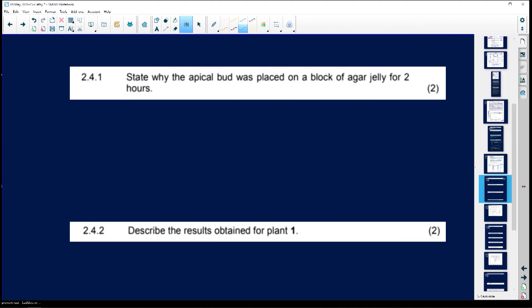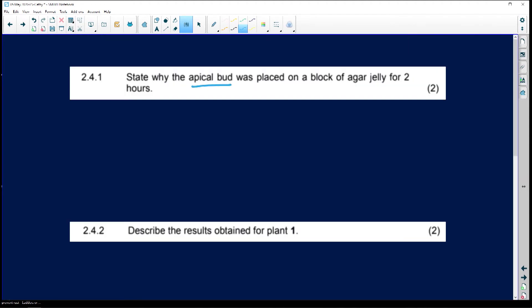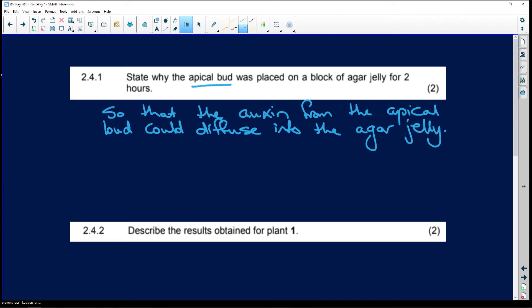The question states: state why the apical bud was placed on a block of agar jelly for two hours. It would be so that the auxins, or if you don't know that they were auxins, you could actually just say plant hormones, so that the auxins from the apical bud could diffuse into the agar jelly. And then when you took that block of agar jelly and you stuck it on top of the cut stem, it grew upwards.